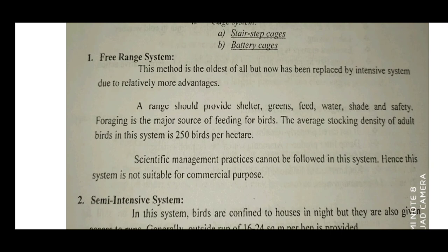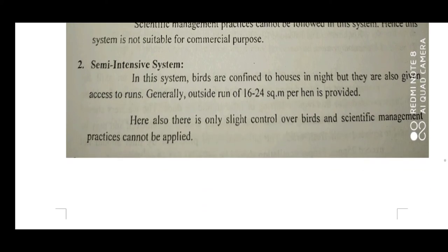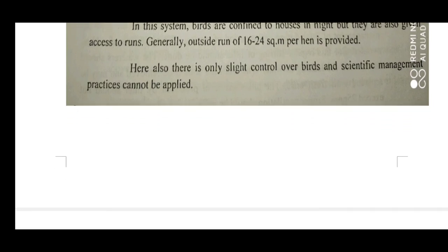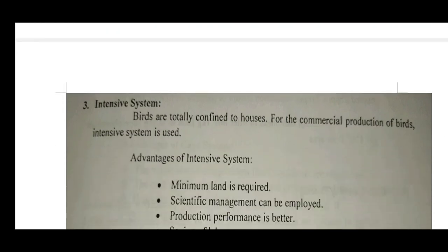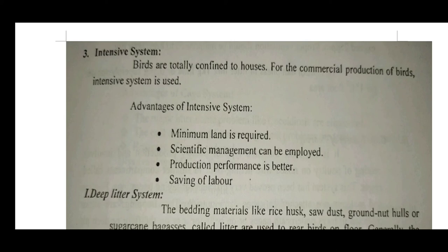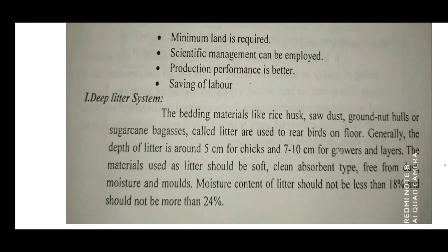The free range system is the oldest of all but has now been replaced by the intensive system due to its relative advantages. In the semi-intensive system, birds are confined to the house at night but are also given access to runs; generally, an outside run of 16 to 24 square meters per hen is provided. However, only slight control over birds is possible and scientific management cannot be applied. In the intensive system, birds are totally confined to houses. Advantages include minimum land required, scientific management can be employed, and production efficiency is better with saving of labor.